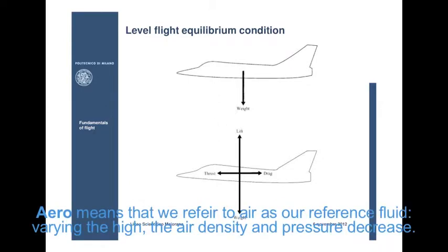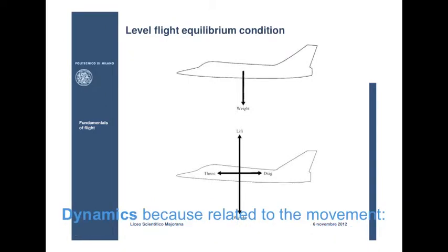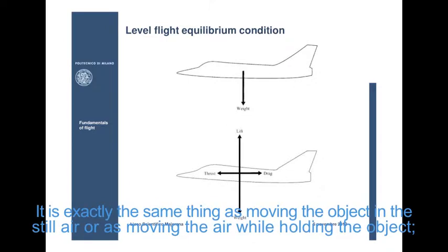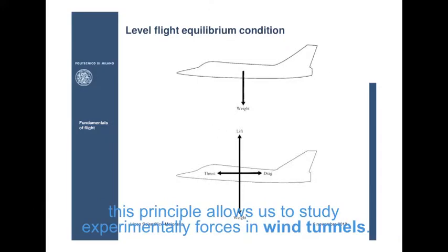Aero means that we refer to air as our reference fluid. Varying the height, the air density and pressure decrease. Dynamic because related to the movement. If there isn't relative movement between the object and the air, there is no force. It is exactly the same thing as moving the object in still air or as moving the air while holding the object. This principle allows us to study experimental forces in wind tunnels.